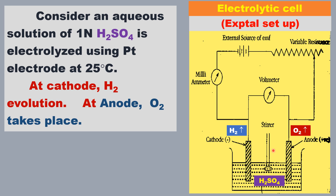There are two platinum electrodes immersed in the electrolytic cell. The electrolytic solution is sulfuric acid solution. An aqueous solution of 1 normal sulfuric acid is taken in the beaker and electrolyzed in the electrolytic cell using two platinum electrodes at 25 degrees Celsius.